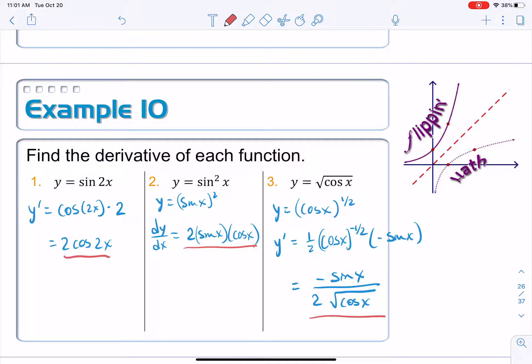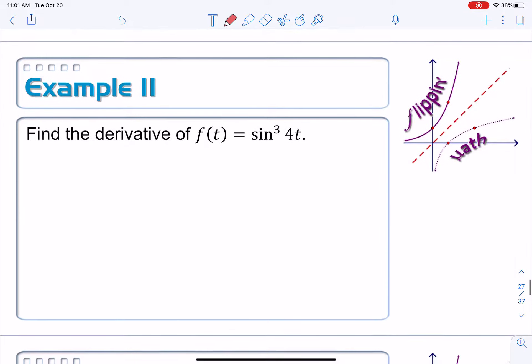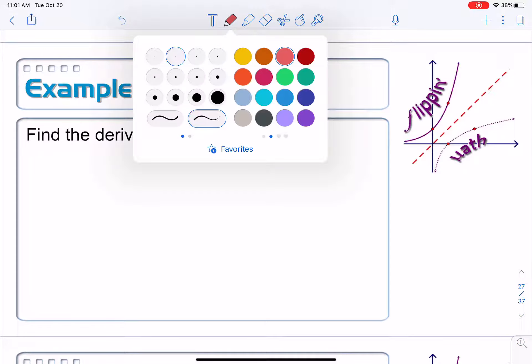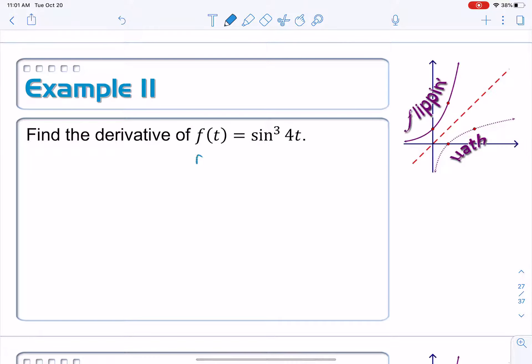All right. Then maybe, maybe just one more of these. On example 11, find the derivative f of t is equal to the sine cubed of 4t. We have a supercomposite function. It's a composite function within a composite function. Function within a function within a function. Why is that? Because I can rewrite this like this. f of t is equal to the sine of 4t raised to the third power. So sine of 4t is inside the cubing function. And then 4t is inside the sine function. So I'm going to have to use the chain rule twice in order to take the derivative of this thing.